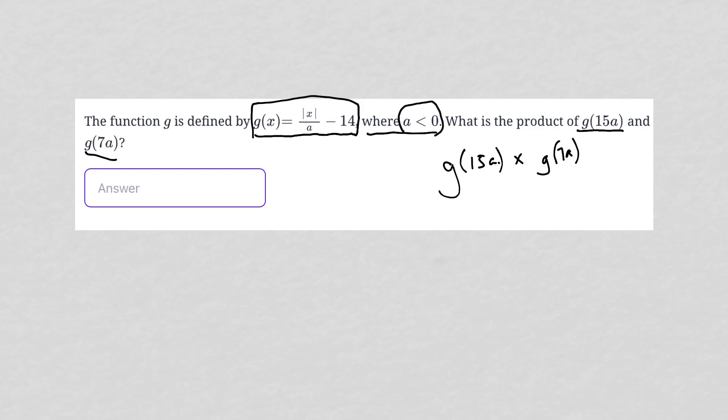I have this rule, I have a strategy called plug in your own number. Typically, I like to use this strategy whenever I have answer choices that contain variables. But there is a second reason why I also like to use that strategy, and that is wherever I wish I knew what a variable represented.